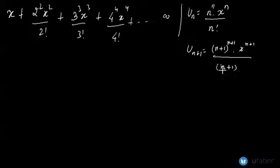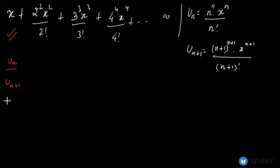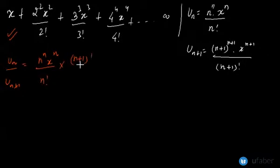Now let us find out the convergence or divergence of this series as per D'Alembert's ratio test. We will be finding out the ratio u_n / u_{n+1}. Plugging in the values, you get n^n · x^n / n! divided by (n+1)^{n+1} · x^{n+1}.